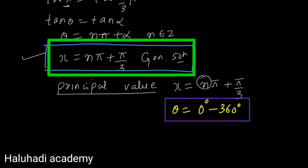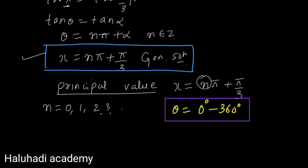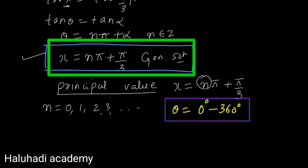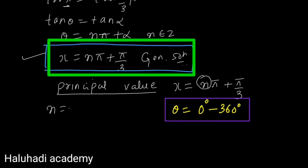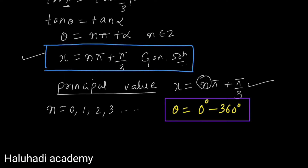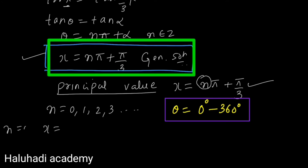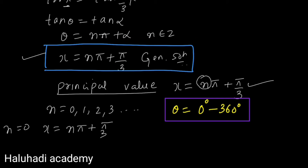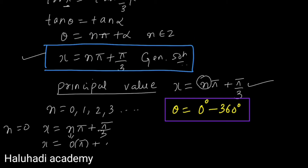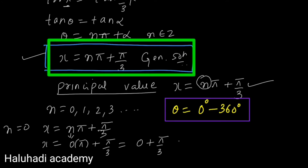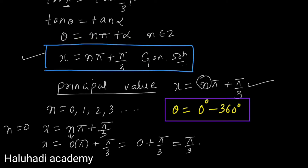The principal value range is 0 to 360°. For n equals zero: x equals 0·π plus π/3 equals π/3. Since π/3 is 60°, which is within the range 0 to 360°, π/3 is one of the principal values.